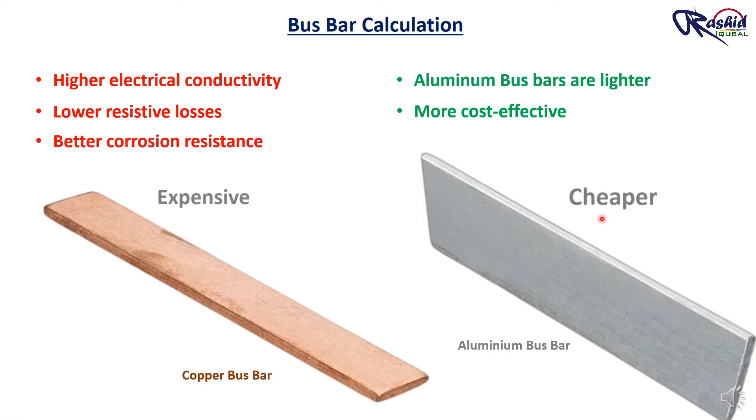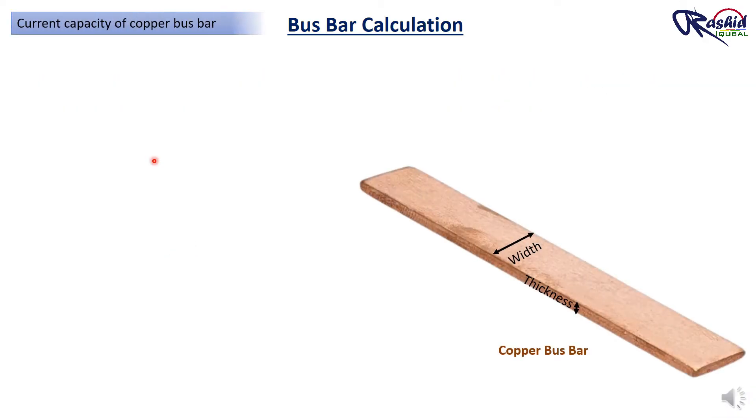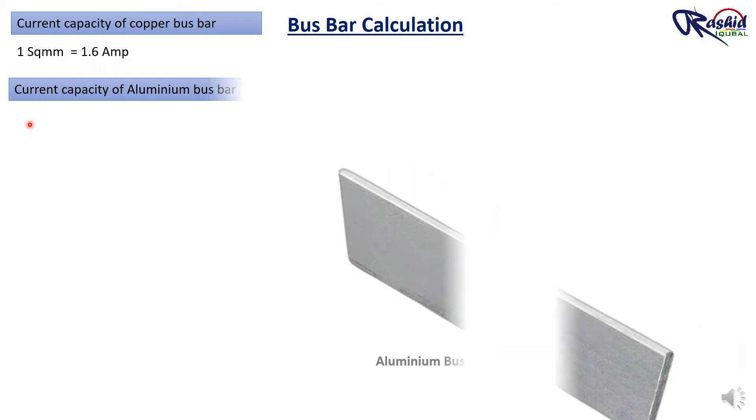When considering copper conductor, the current carrying capacity of 1 square mm of copper is approximately 1.6 ampere. For aluminium conductor, the capacity of 1 square mm is around 0.8 amperes. While these values can vary based on the quality of material, we can consider this value as a thumb rule for the busbar calculation.